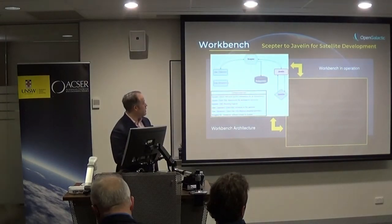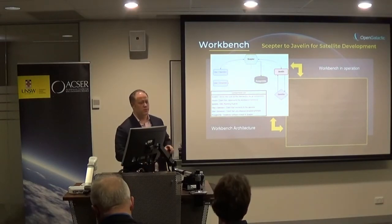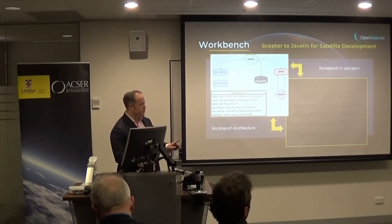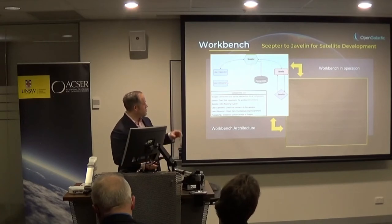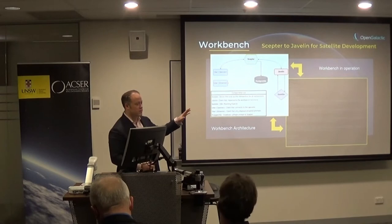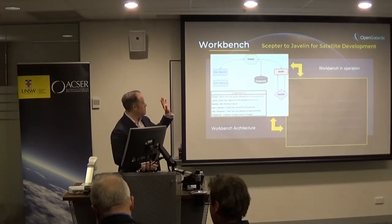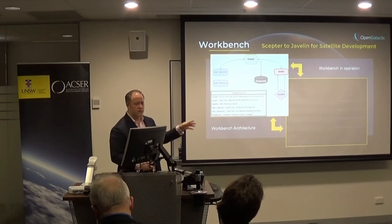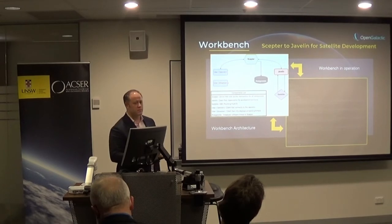This is the general working plan with excerpts from our tutorial series that we're going to be releasing — they are written, they actually exist. We essentially have the user or operator connects to Scepter, which connects to Javelin, which talks to the satellite. It all works over standard TCP/IP connectivity. So you can have one engineer working on commands and telemetry structures and another working on the hardware in different rooms — as long as you're on the same network you can talk to each other. It uses a standard Postgres database.